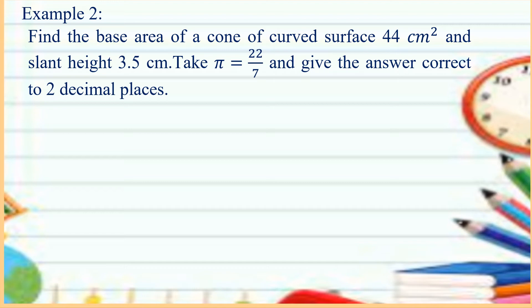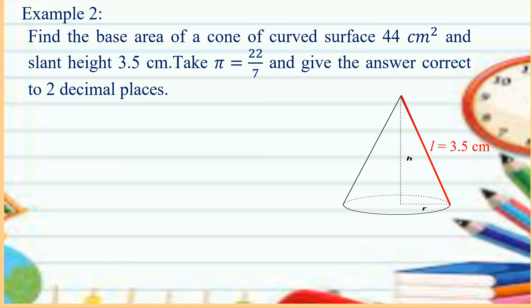Example number 2: Find the base area of a cone of curved surface 44 square cm and slant height 3.5 cm. Take pi is equal to 22 over 7 and give the answer correct to 2 decimal places. We will use the curved surface formula which is equal to pi R L, and set it equal to 44 square cm.